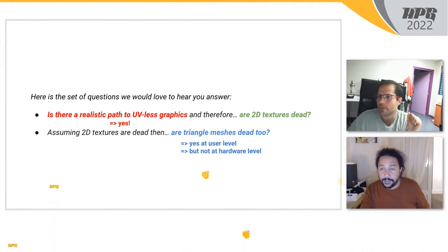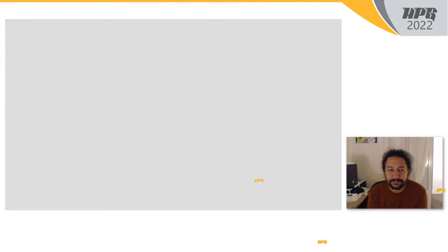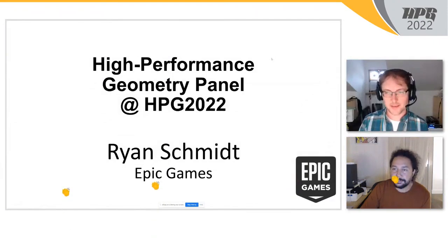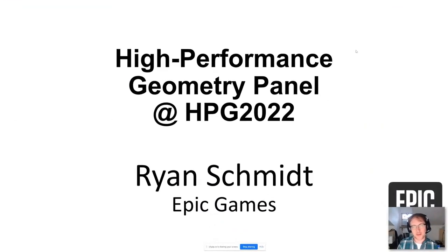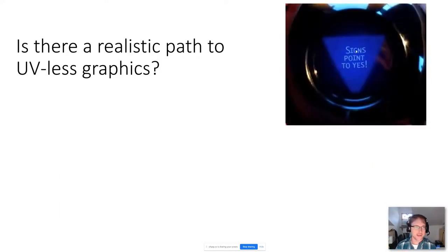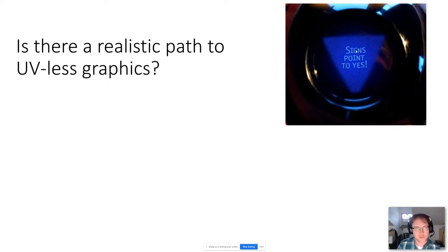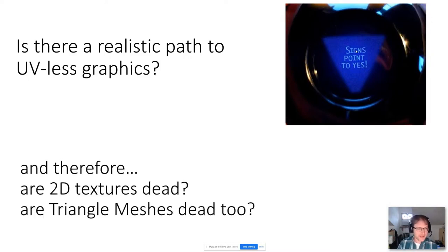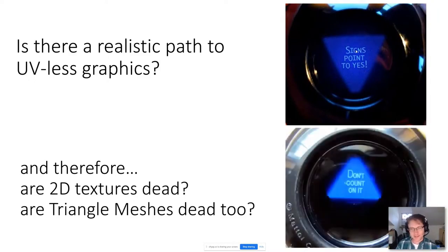Ryan Schmidt from Epic: is there a realistic path to UV-less graphics? I think there is. We've just heard two people explain lots of options, and there are other things like distance fields, NERFs, and all sorts of things that don't have UVs that are coming in the future. Are 2D textures or triangle meshes dead? My answer is no, they're not. I make modeling tools for modeling with triangle meshes specifically — not even quads, just triangles.